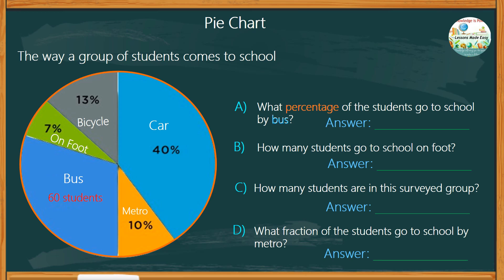All we have to do is add the percentage of all the other ways the students go to school. All together, we have a total of 70%. So if one whole circle makes up 100%, therefore, 30% of the students go to school by bus.